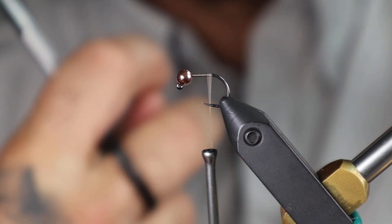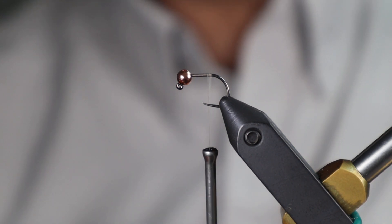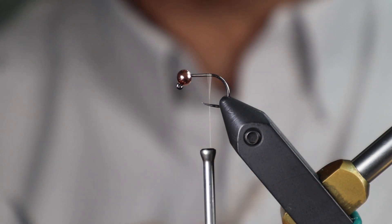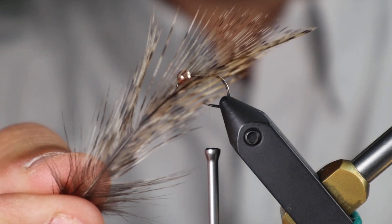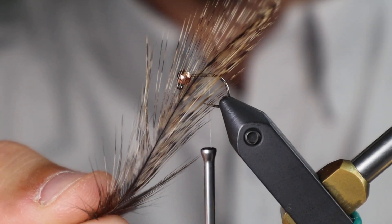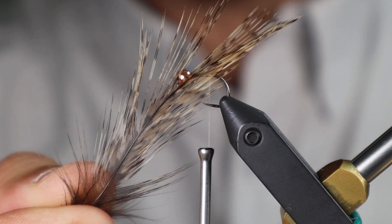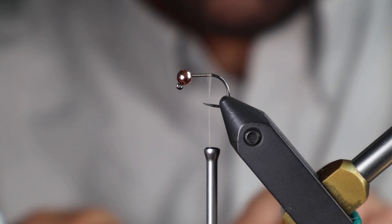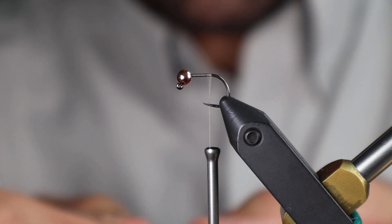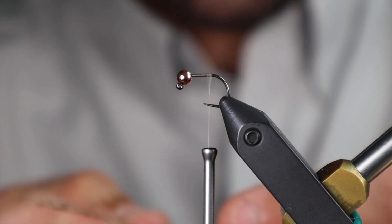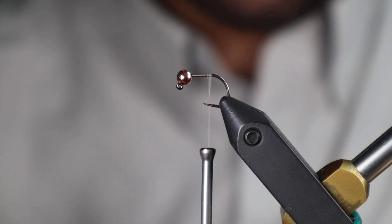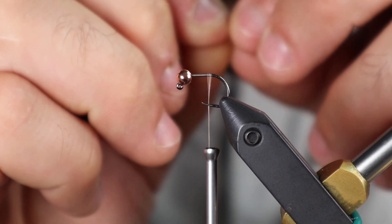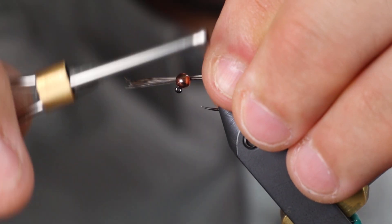Let's start the thread behind the bead, take it to the back. I stopped just before the bend. The first material we're going to tie in is the tail. I like to use Coq de Leon for the naturals. You could also use pheasant tail, no problem. I have a cape; I pulled one of these really mottled feathers off the side. I take about five or six fibers, pull them 90 degrees to the stem, kind of align the tips, and then pull it off.